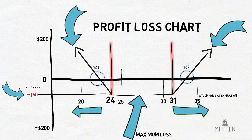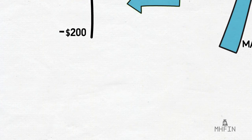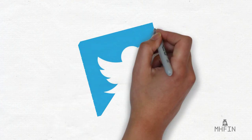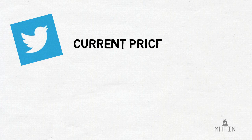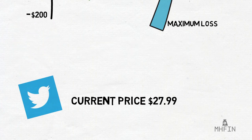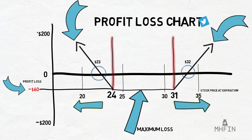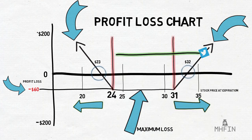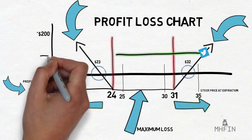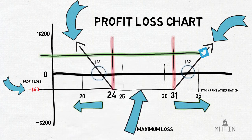Let's take a look at a stock that fits our hypothetical mold: Twitter, with its current price of $27.99. Let's pretend we bought a long strangle for Twitter and it expires at $36. Plotting that on the chart, at $36 we can see that it expired well above the $31 maximum loss boundary and above the $32 breakeven point, which means we will generate a massive profit based on our Y-axis.